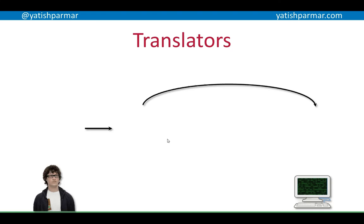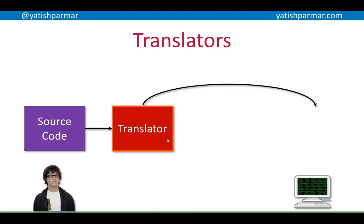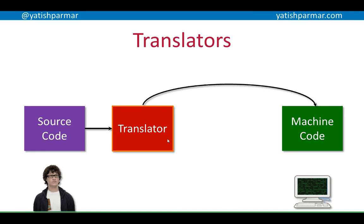You've got your source code that gets fed into a translator, which then creates machine code. This diagram is the basic version, and as we move on and learn about the different forms of translator, it will get more and more complex — you may want to label it further with more detail to explain what's going on.